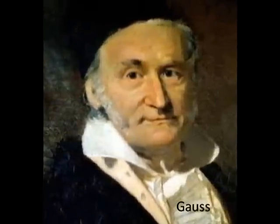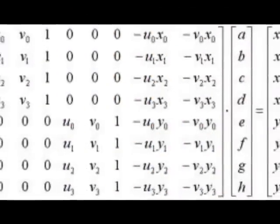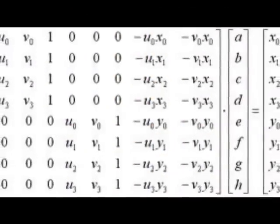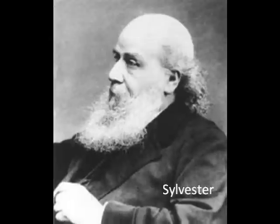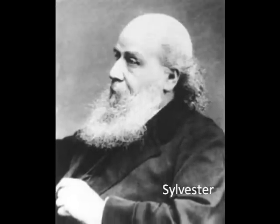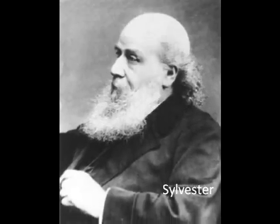in which a method is given for solving simultaneous equations using a counting board that is mathematically identical to the modern matrix method of solution outlined by Carl Gauss, also known as Gaussian Elimination. The term matrix for such arrangements was introduced in 1850 by James Joseph Sylvester.